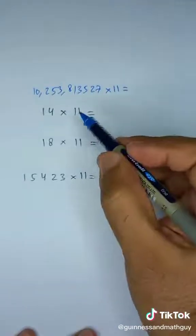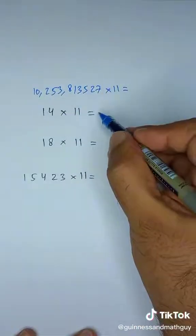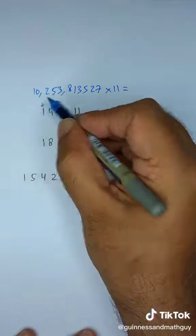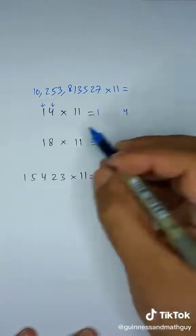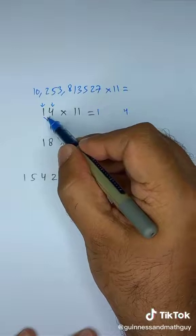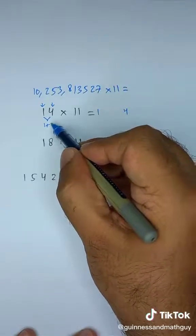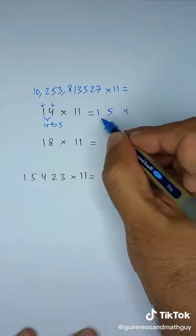So let's take a smaller number, 14. You write the first number, then you write the last number. And in between, you add these two: 1 plus 4 is 5. So here is our answer, 154.